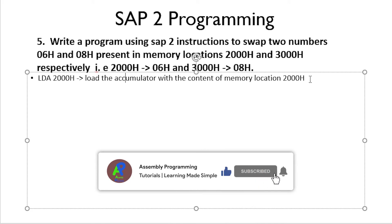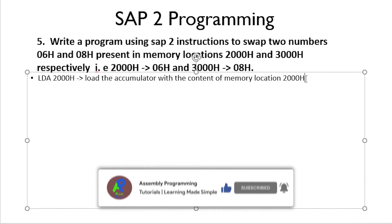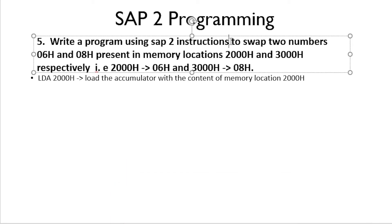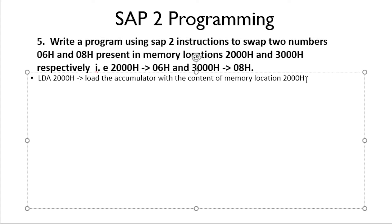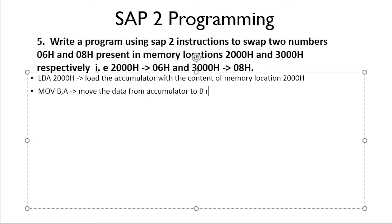Now we need to move the content of the accumulator to one of the registers — register B or register C. In swapping numbers we use a temporary register to hold data. We will use the MOV instruction: MOV B, A. Here B is the destination and A is the source, so this instruction moves data from accumulator to register B. By the end of this instruction we will have 06H in register B.